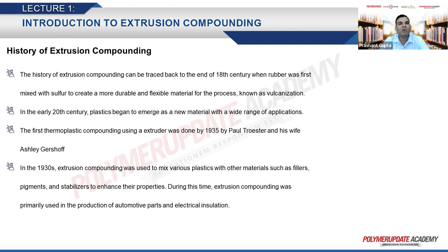In the early 20th century, plastics began to emerge as new materials for a wide range of applications. Large-scale production really picked up in the 1940s and 50s, driven by World War II demand. The first thermoplastic compounding was done in 1935. In the 1930s, extrusion compounding was used to mix plastics with fillers, pigments, and stabilizers to enhance their properties, primarily for automotive parts and electrical insulation.